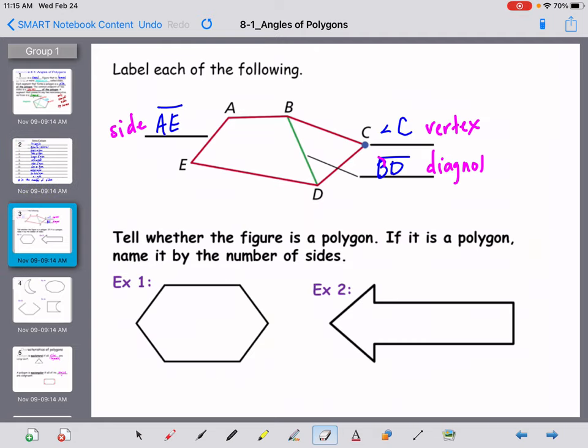So if we were to label the following, side AE would be a side, BD in green would be a diagonal, and then angle C there that would be a vertex.